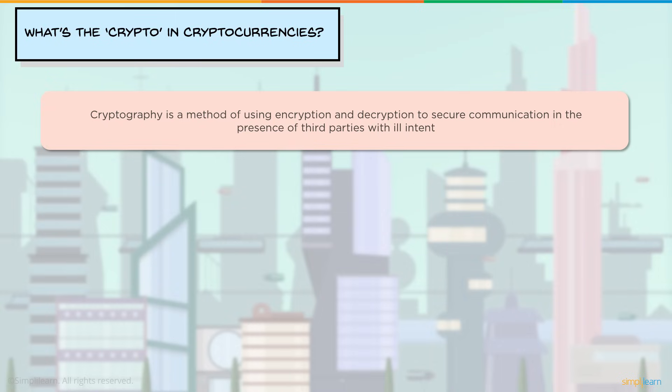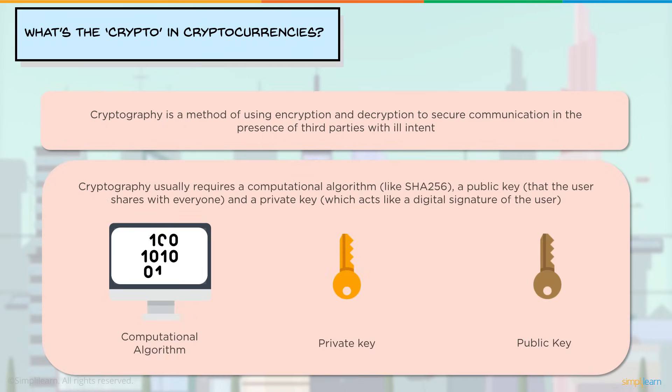What's the 'crypto' in cryptocurrencies? Crypto refers to cryptography — a method of using encryption and decryption to secure communication in the presence of third parties with ill intent, such as those who want to steal your data or eavesdrop. Cryptography uses computational algorithms like SHA-256, which is the hashing algorithm Bitcoin uses, a public key which is like a digital identity of the user shared with everyone, and a private key which is the digital signature of the user kept hidden.